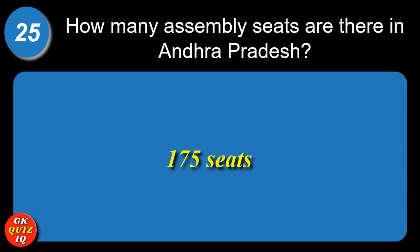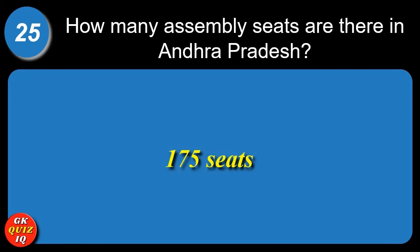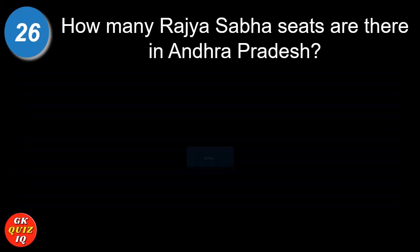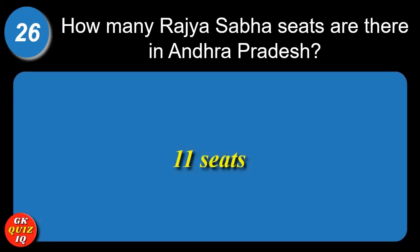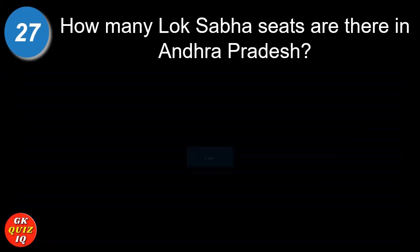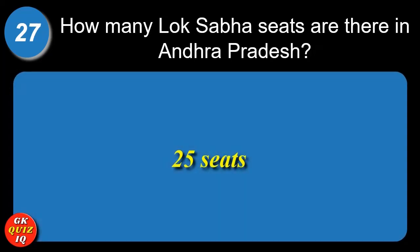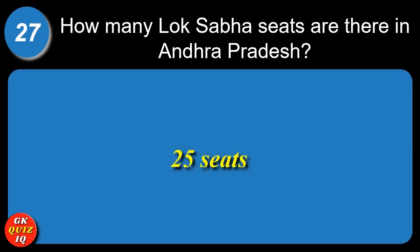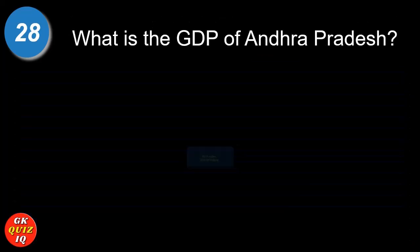How many assembly seats are there in Andhra Pradesh? 175 seats. How many Rajya Sabha seats are there in Andhra Pradesh? 11 seats. How many Lok Sabha seats are there in Andhra Pradesh? 25 seats.